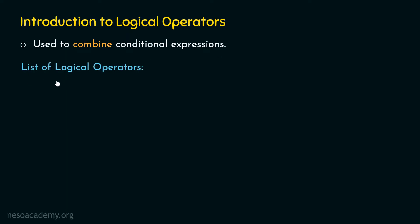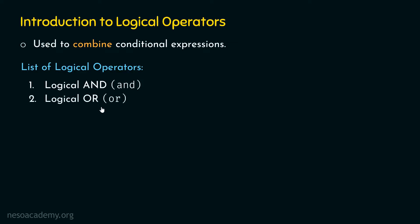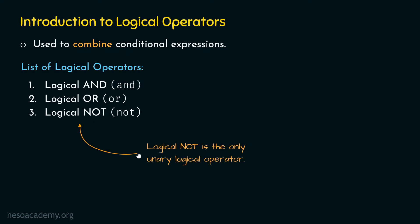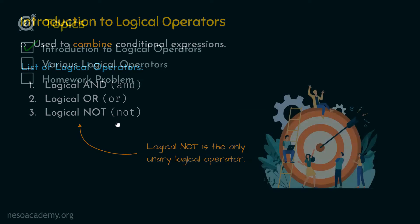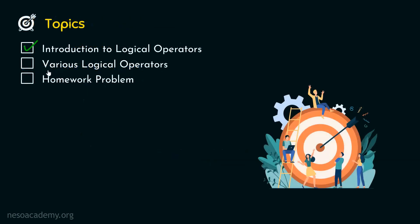Following is the list of logical operators available in Python. The first is logical AND, denoted by 'and'. The second is logical OR, denoted by 'or'. The third is logical NOT, denoted by 'not'. Please remember that logical NOT is the only unary logical operator, while AND and OR are binary operators.